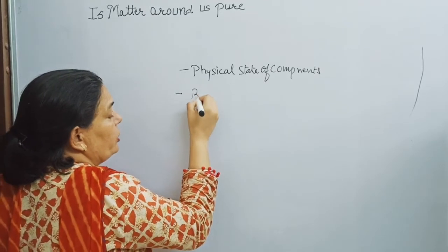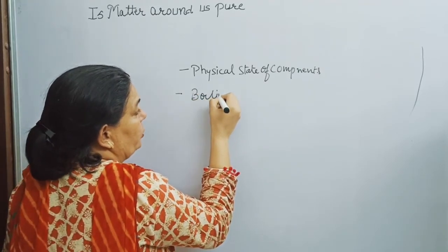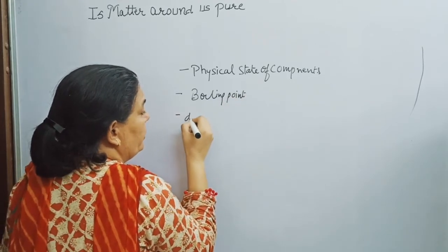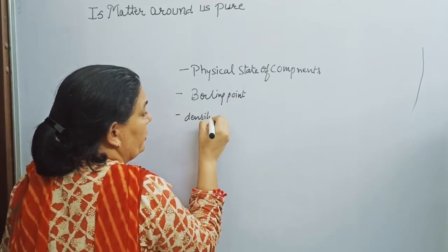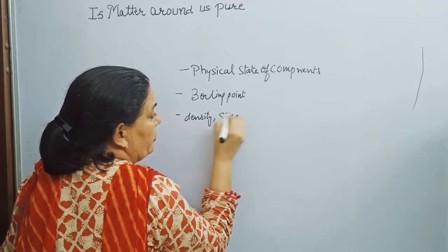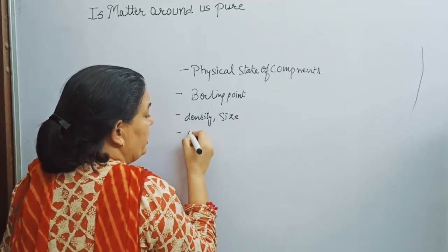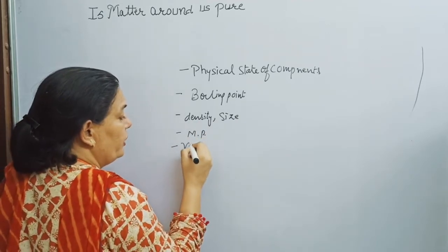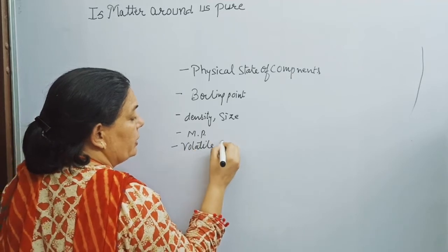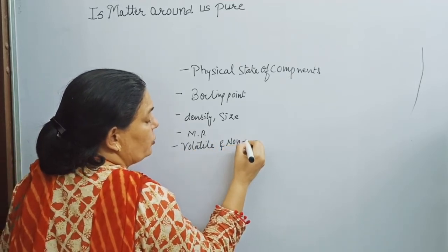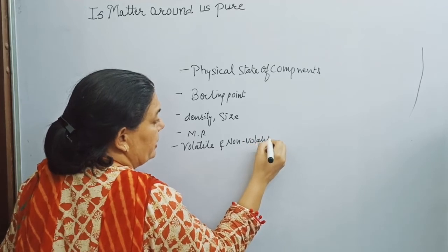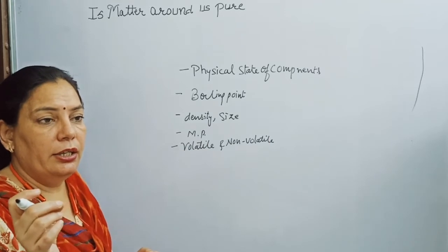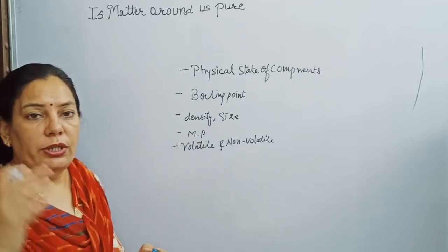The second factor is the boiling point — if liquids are present, what is the boiling point? If solids are present, what is the density and size of particles? Also, what is the melting point? And if liquids are present, whether the liquid is volatile or non-volatile. All these factors decide which is the best-suited separation technique to separate the components of a mixture.